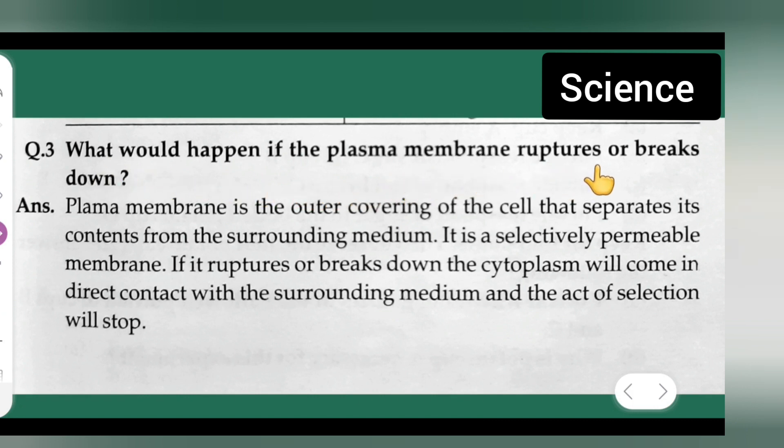Answer: Plasma membrane is the outer covering of the cell that separates its contents from the surrounding medium. It is a selectively permeable membrane.